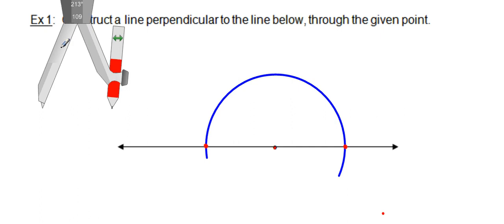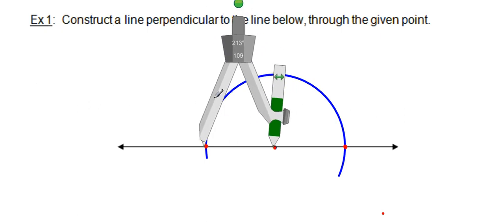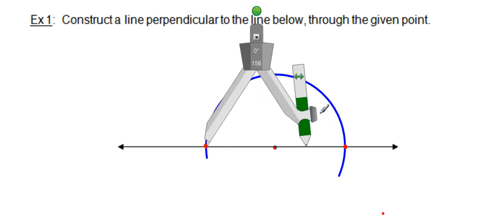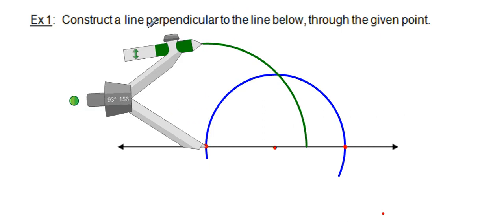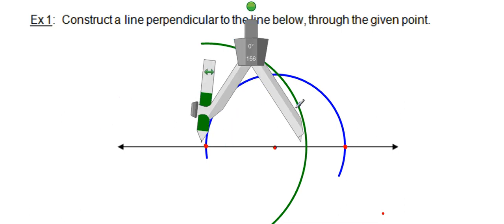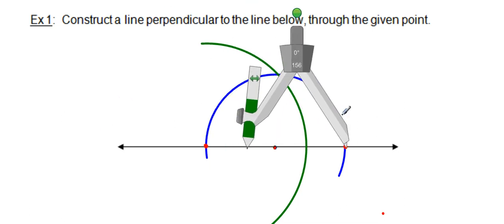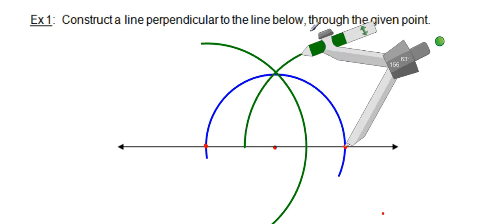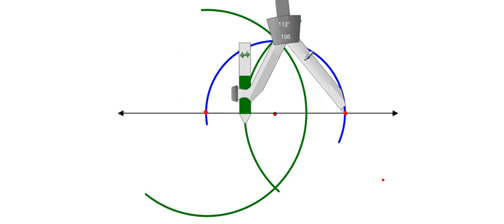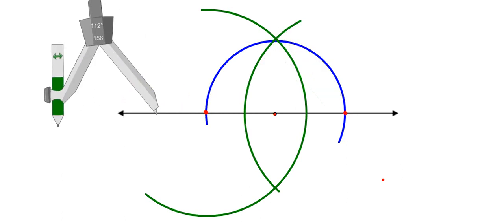This is a construction you learned on the very first day — nothing new. Open the compass to a bit more than half the length of the segment you're bisecting, draw a nice big arc, then flip the compass to the other endpoint and draw another big arc. Connect the intersection points of those two arcs.